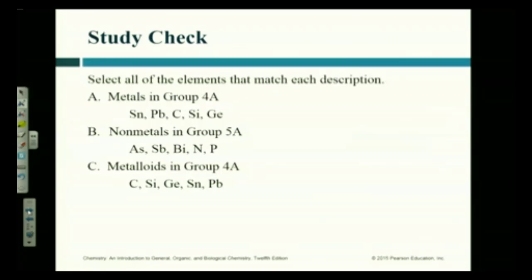Metalloids in Group 4. We already did Group 4. Who are the metalloids in Group 4? Silicon and germanium. Not geranium. We're not growing plants.